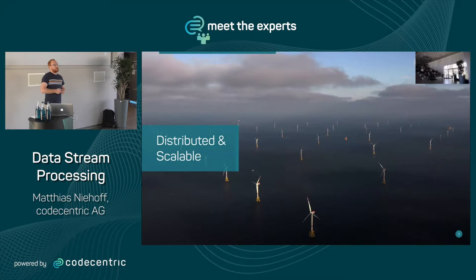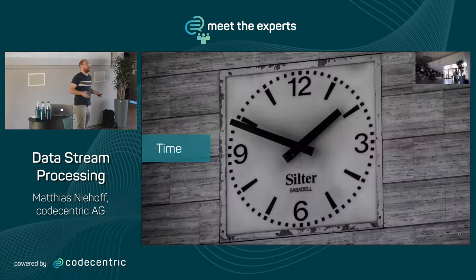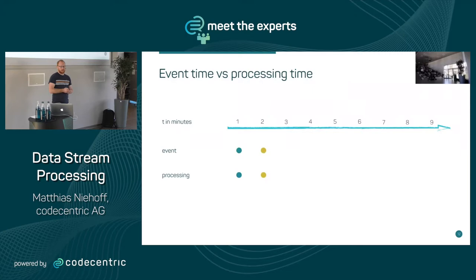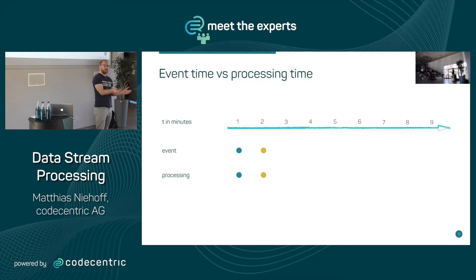So what are the typical problems when doing analysis on streaming data? The first is time — and together with time, most of the time comes order. There's a notion of event time and processing time. Event time is when the event actually occurs in real life — for example, playing Candy Crush on a plane ride — that's the event time, just when the event happens.